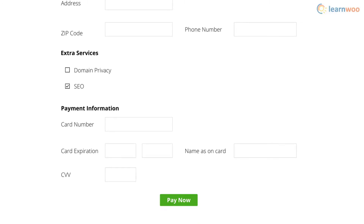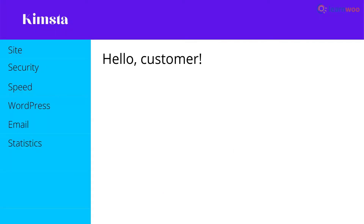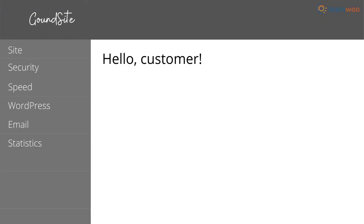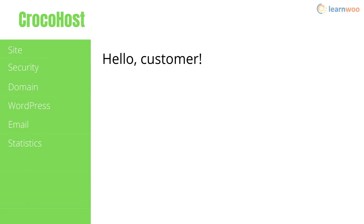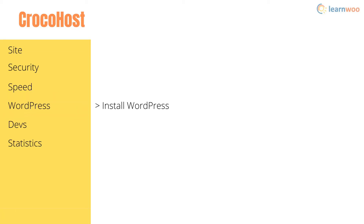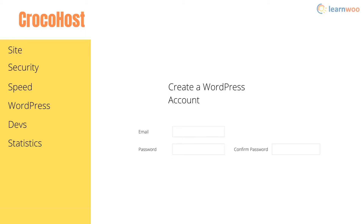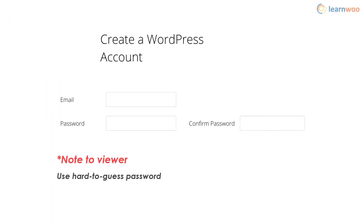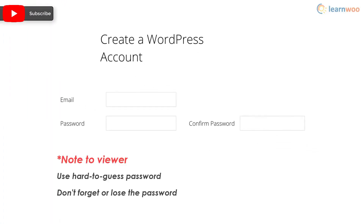After making the payment you'll get logged in to the hosting provider's dashboard. Different providers have different dashboards with a lot of different options in the sidebar, but you only need to worry about one — WordPress. Under WordPress, a sub-tab like Install and Manage will help you install WordPress. If you don't have a WordPress account you'll have to create a new one with an existing email and a new username and password — use a hard-to-guess username and password.